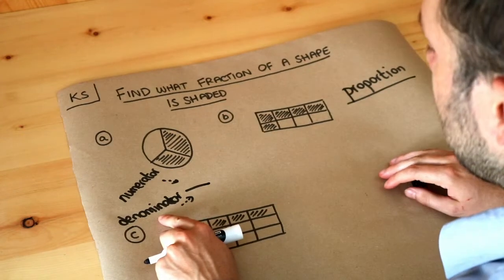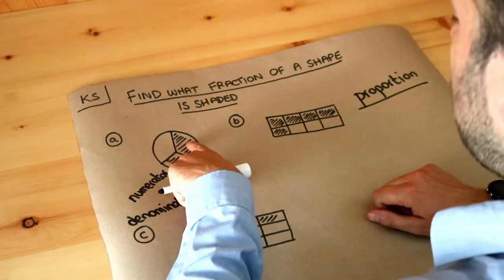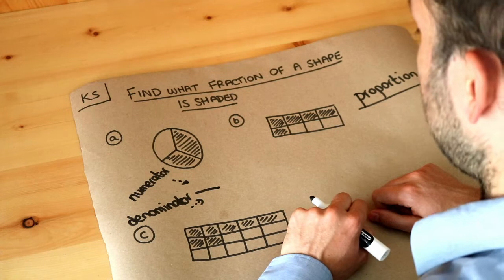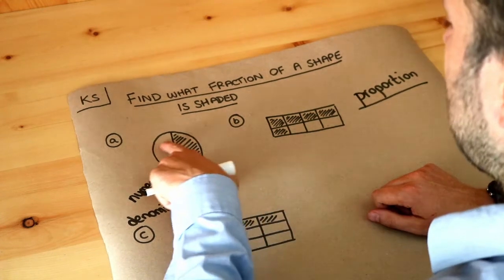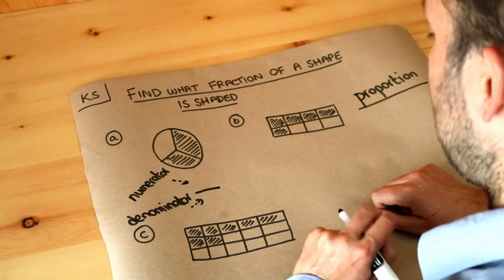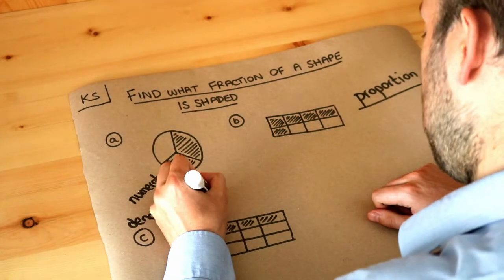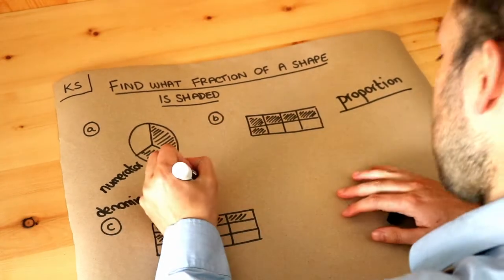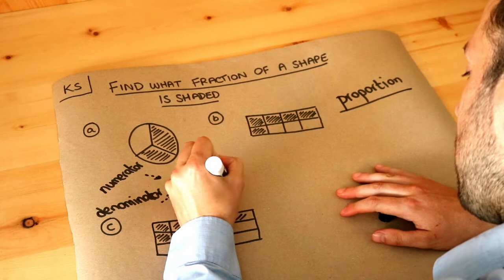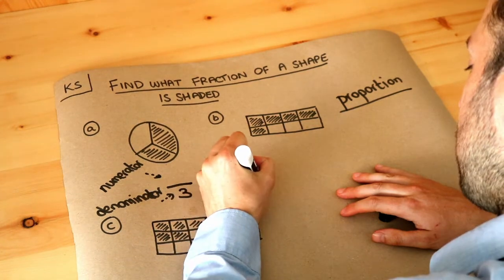Now the denominator is how many pieces you've broken something up into. Now this is a pizza. We split the pizza into three pieces. The denominator would be three. So let me write that. How many parts in total.